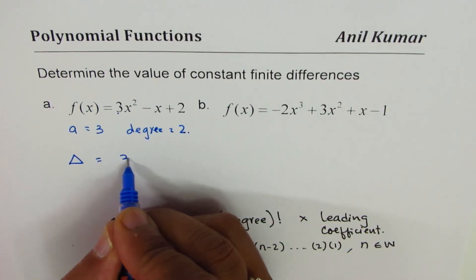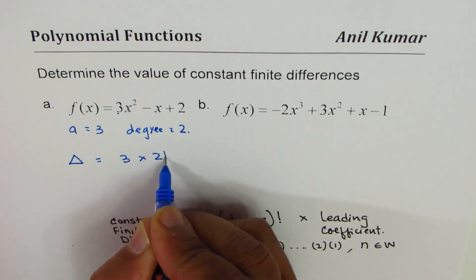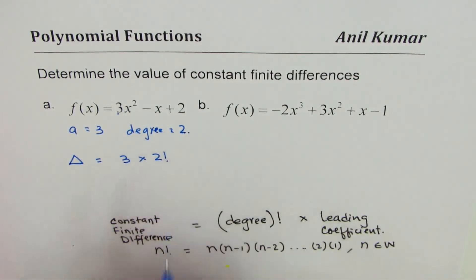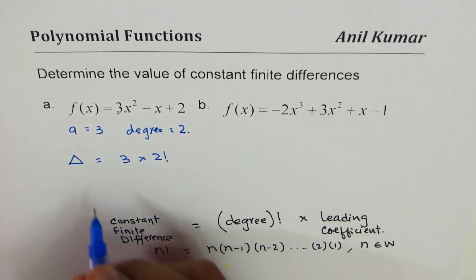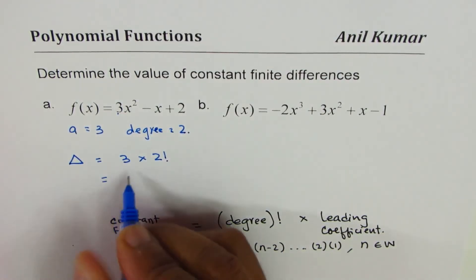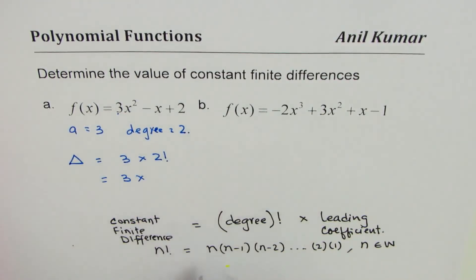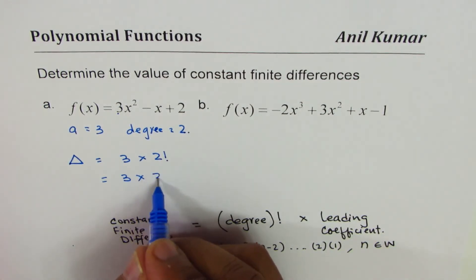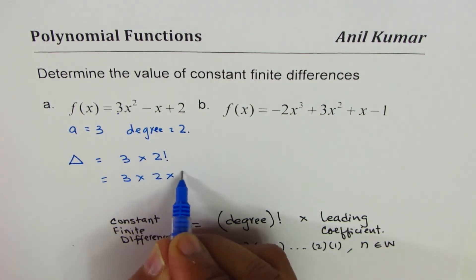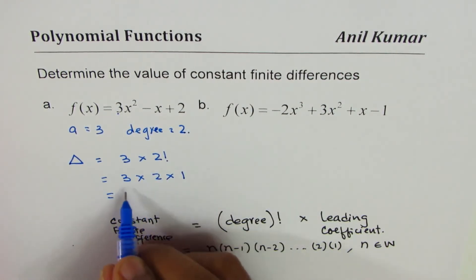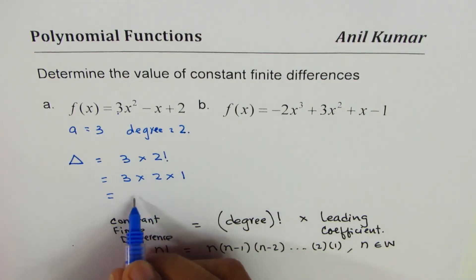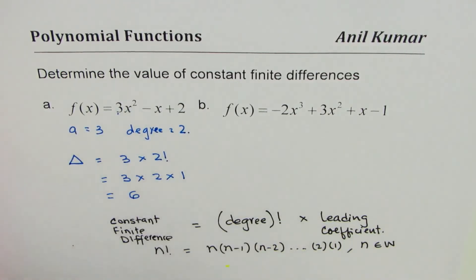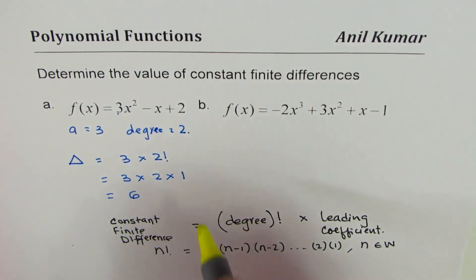So we write 3 times 2 factorial, and 2 factorial means 2 times 1. That gives us 3 times 2 equals 6, and 6 times 1 equals 6. So the answer for Part A is 6.